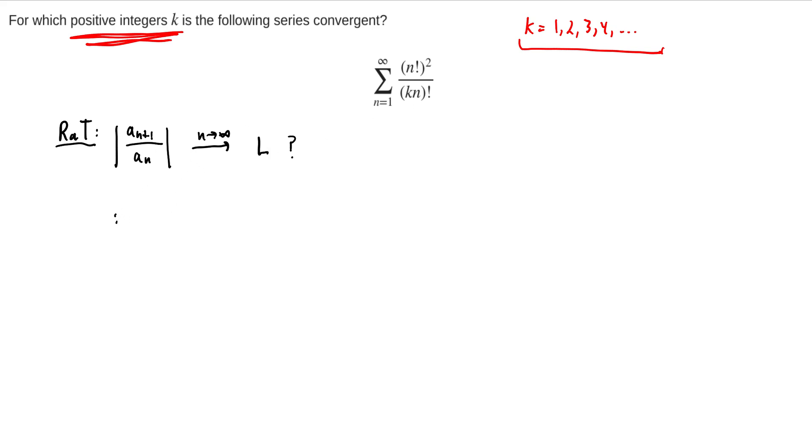I'll just write this in two ways here. So in general, what I like to do is write my ratio test as a sub n plus 1, especially since almost always these things are going to be fractions. And so multiply by the reciprocal of a sub n. And so this is what I'm going to compute.